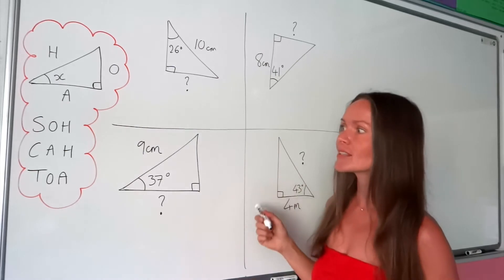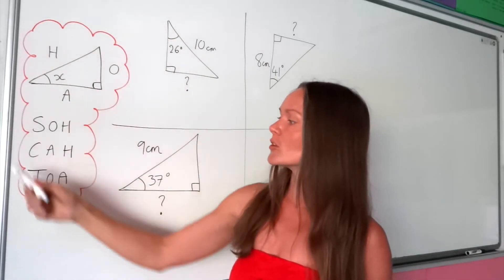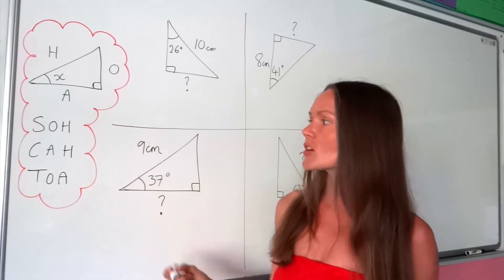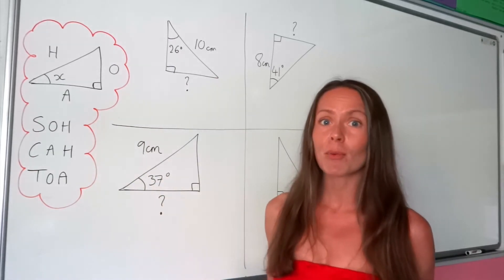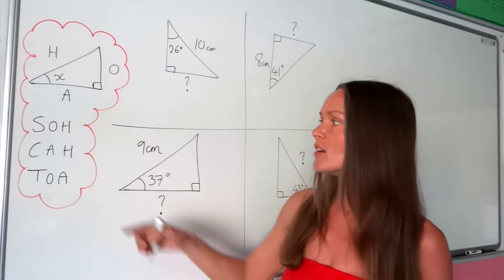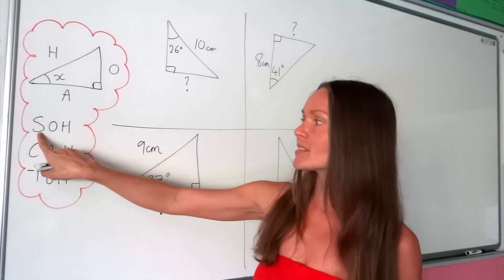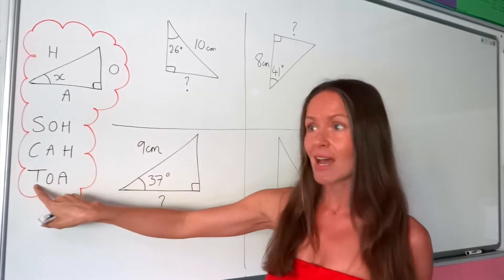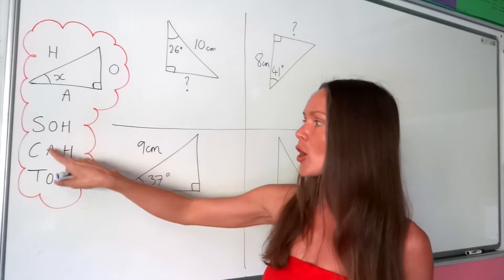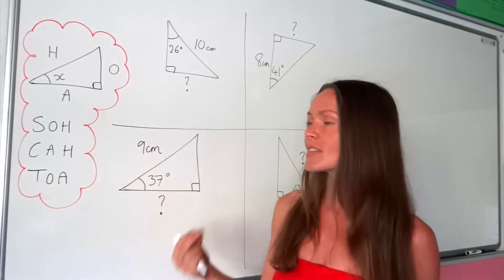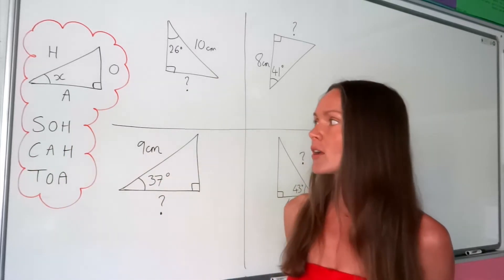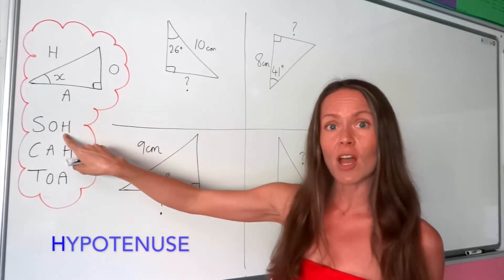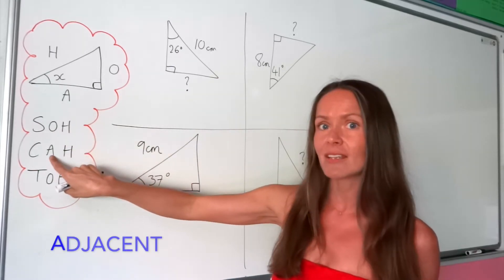Before we have a go at these examples, I just want to draw your attention to over here. SOH CAH TOA is just a way we remember when we're using sine, cos or tan. S stands for sine, C stands for cos, and T stands for tan. And then O, A and H — they just stand for the sides in the triangle.